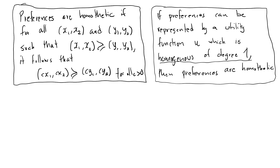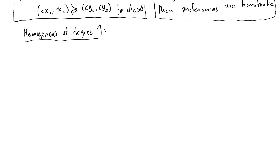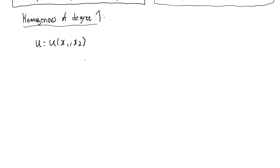The first thing I will do is describe what is meant by homogeneous of degree one, and then we will see exactly why these two definitions are equivalent. So let's begin by looking at the definition of homogeneous of degree one. This is a mathematical concept that we apply to a utility function which depends on two variables. The mathematical definition is the same no matter which function we look at.